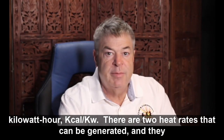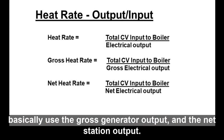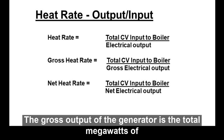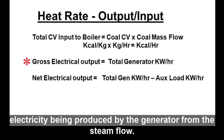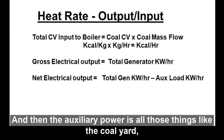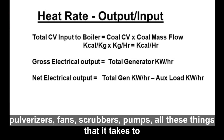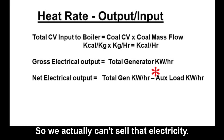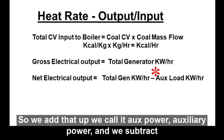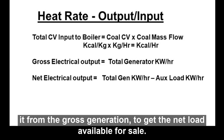There are two heat rates that can be generated using the gross generator output or the net station output. The gross output is the total megawatts of electricity produced by the generator from steam flow. Auxiliary power covers things like the coal yard, pulverizers, fans, scrubbers, and pumps — everything it takes to run a power plant. We can't sell that electricity, so we subtract it from the gross generation to get the net load available for sale.